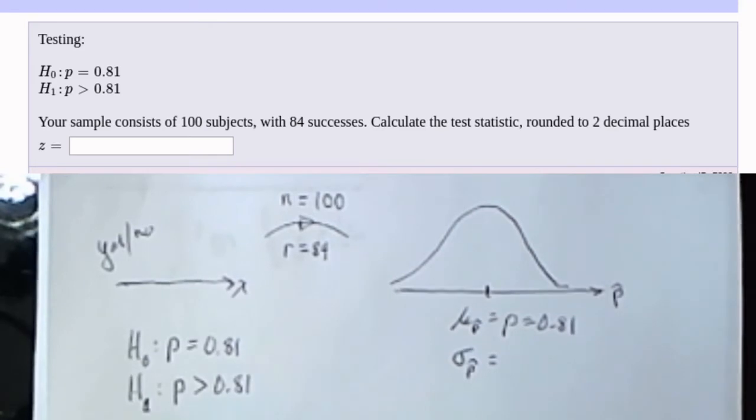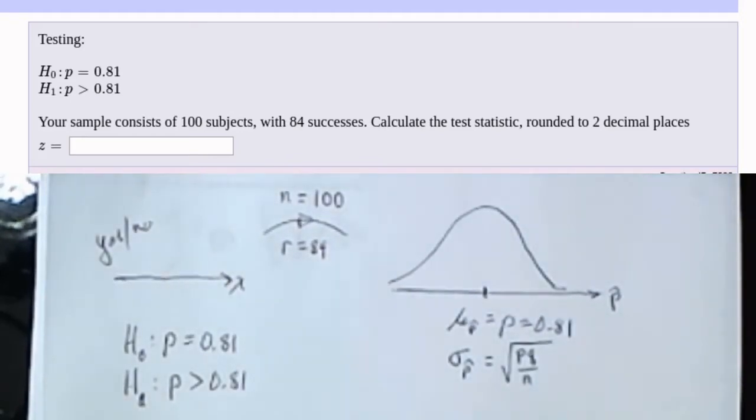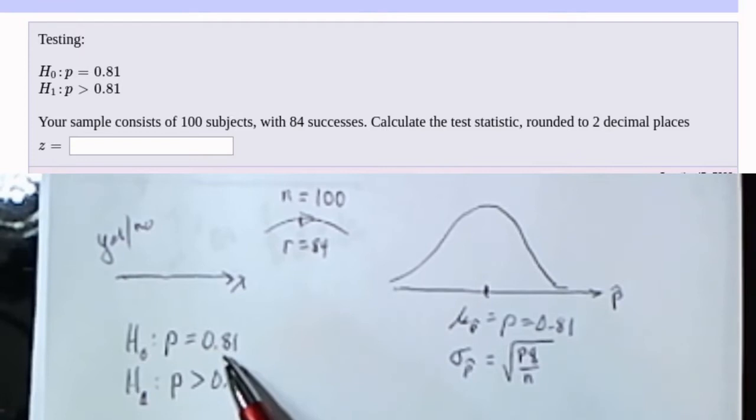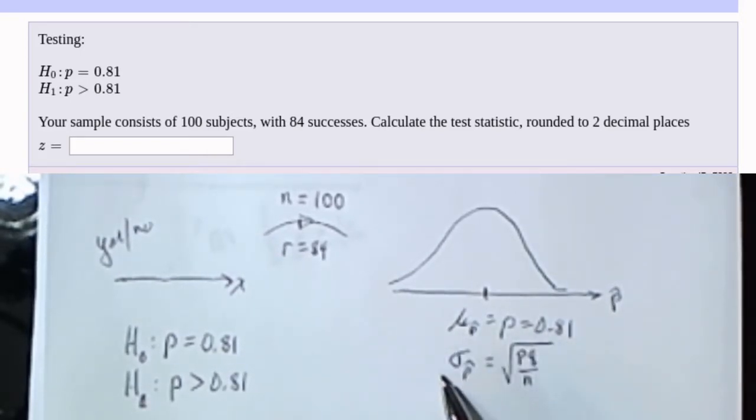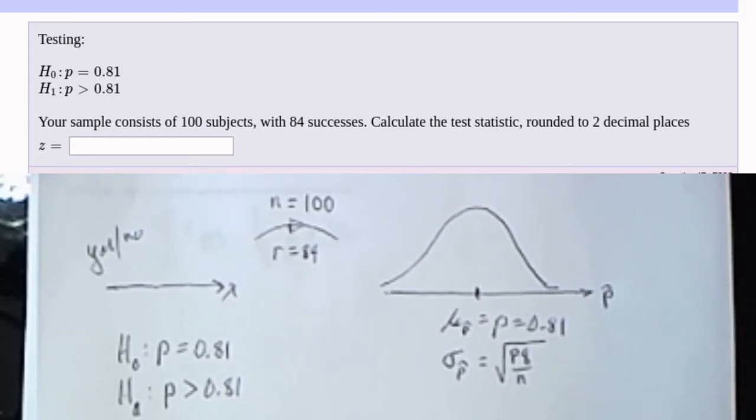Further, we know that the standard deviation of this distribution of sample proportions is the square root of p times q. p is the probability of success here, and q is the probability of failure. So since p is 0.81, then q in our case is going to be 0.19, because 0.81 and 0.19 add up to 100%. So in proportions, the standard deviation of the distribution of the sample proportions is going to be this amount. So that's all of the given information in this problem.